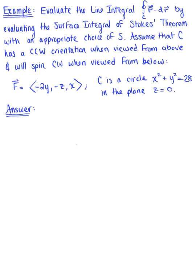We want to evaluate the line integral by evaluating the surface integral of Stokes' theorem with the appropriate choice of surface S. We assume that C has a counterclockwise orientation when viewed from above. We are given a vector field defined by the components negative 2y and negative zx, and our oriented curve C is the circle x squared plus y squared equals 28 in the xy plane, where z equals 0.